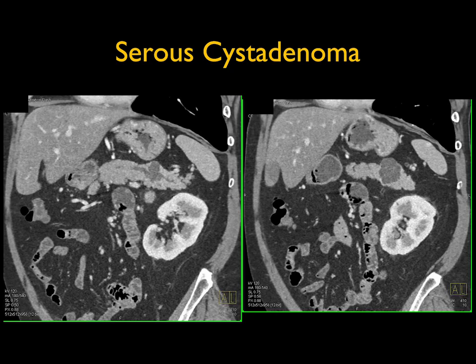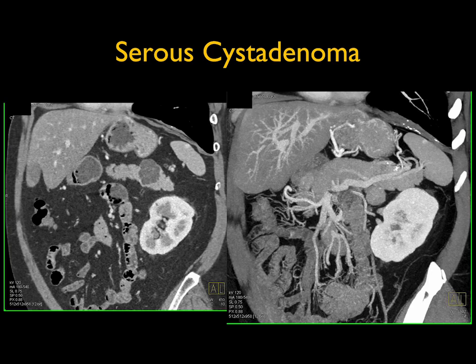A challenge in this area is serous cystadenomas, which can have septations and central calcifications, but can also be purely cystic with no septations — making diagnosis difficult. Serous cystadenomas are benign lesions, sometimes symptomatic because of size. This was an incidental finding; if you knew for sure this was a serous cystadenoma it would be a leave-alone lesion.